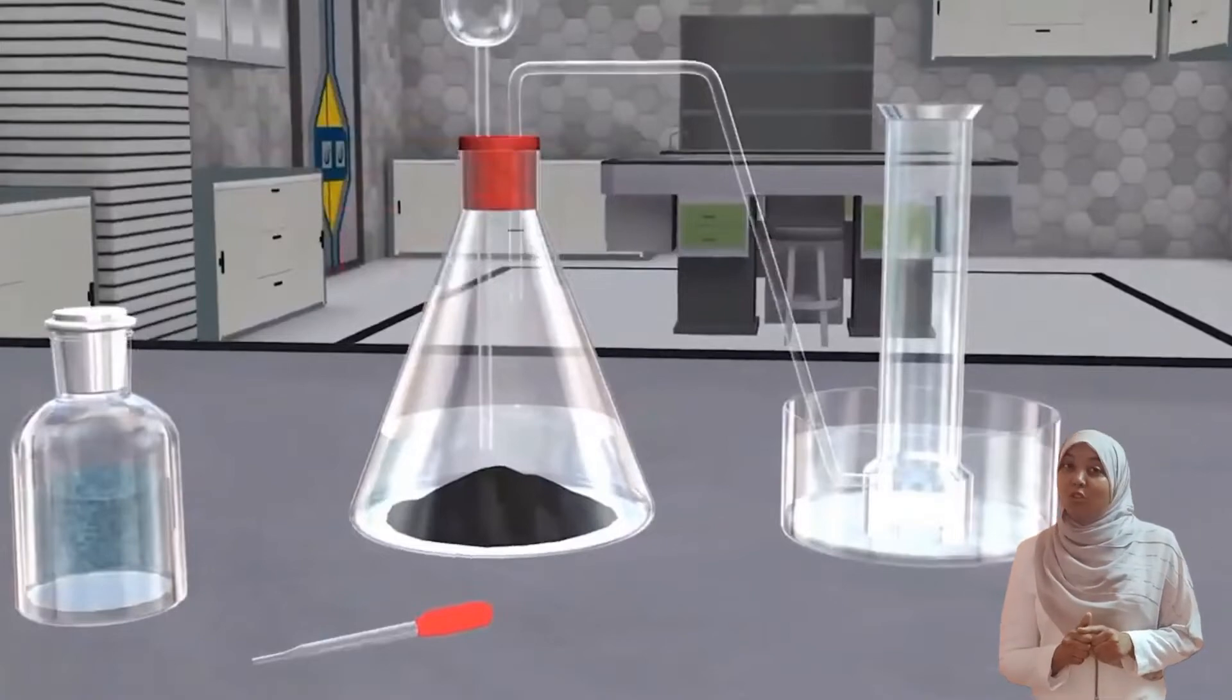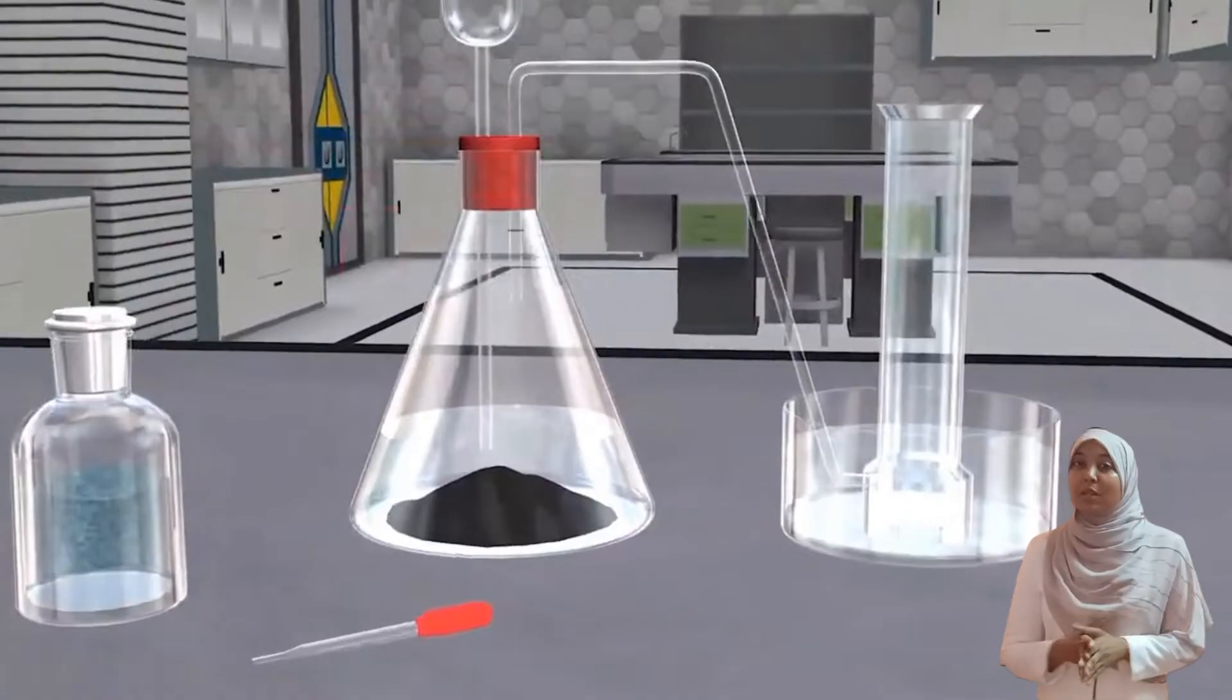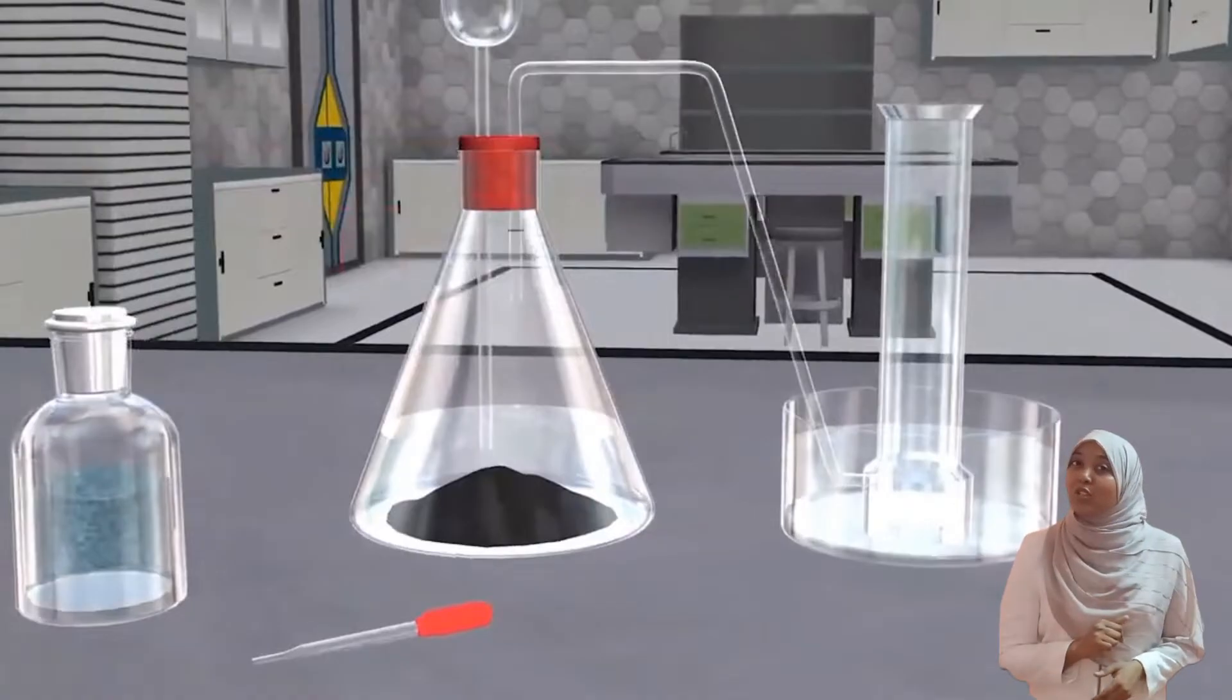Laboratory preparation of oxygen. Oxygen gas can be prepared in the lab through various methods. In our lesson today, we are going to prepare oxygen using two methods: number one using hydrogen peroxide and number two using potassium manganate 7.